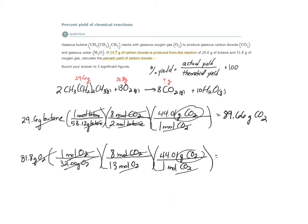And in here we have 31.8, open parenthesis, one over 32, close. Eight over 13, 44.01 over one. So you get 26.91 grams of CO2.